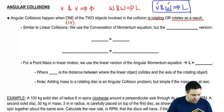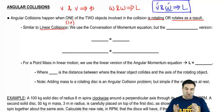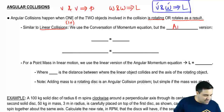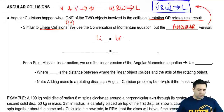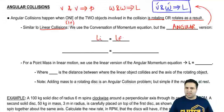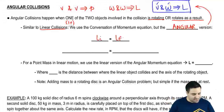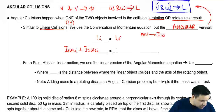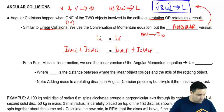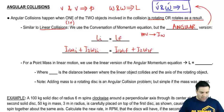Similar to linear collisions, we use the conservation of momentum equation but the angular version. Instead of P initial equals P final, we write L initial equals L final. For linear momentum expanded you'd have M1V1 + M2V2 = M1V1f + M2V2f. It's the same thing here but MV is replaced by I·omega. So it becomes: I₁ω₁ᵢ + I₂ω₂ᵢ = I₁ω₁f + I₂ω₂f. That's the conservation of angular momentum equation.